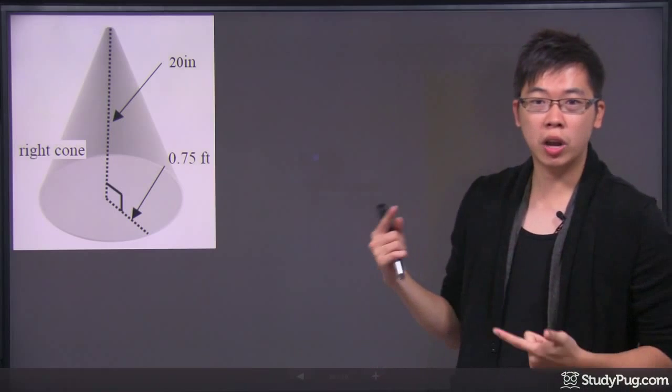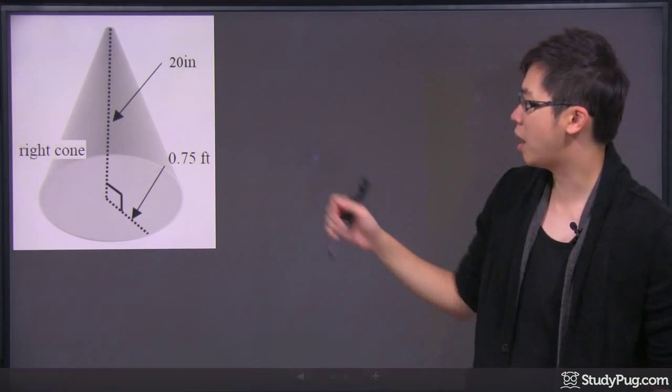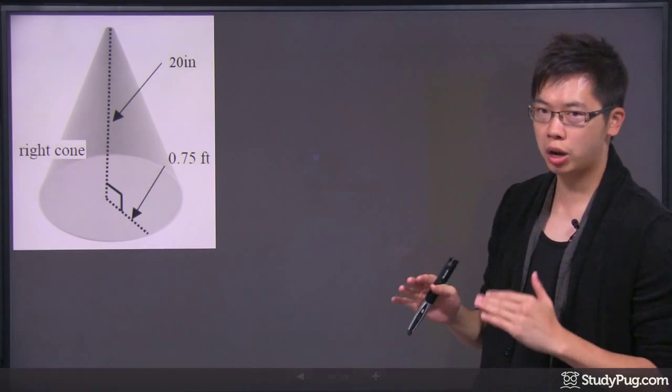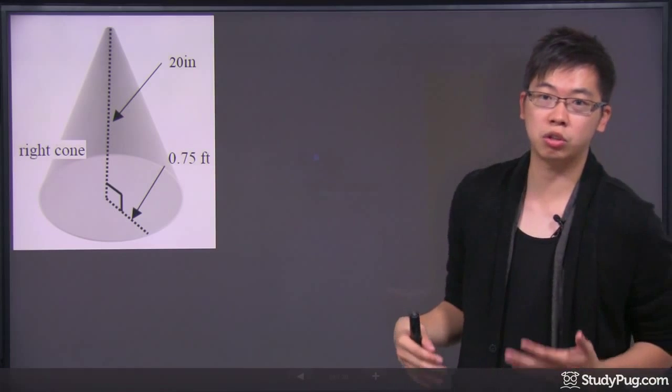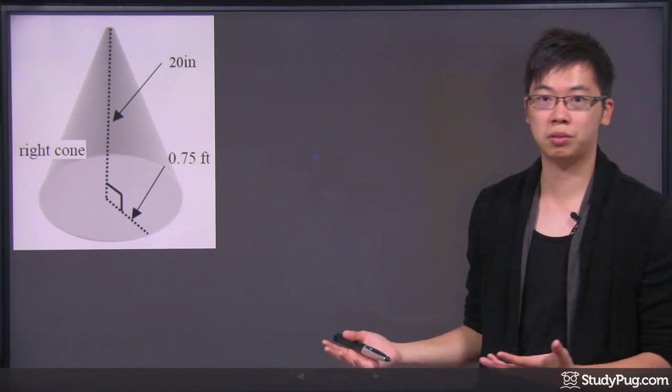Before we start, we're going to always check the dimension to see if they're consistent with each other. We've got the inch on the top and the feet on the bottom. Not good. My suggestion is that you change the 0.75 feet into inches. That'll be much better.